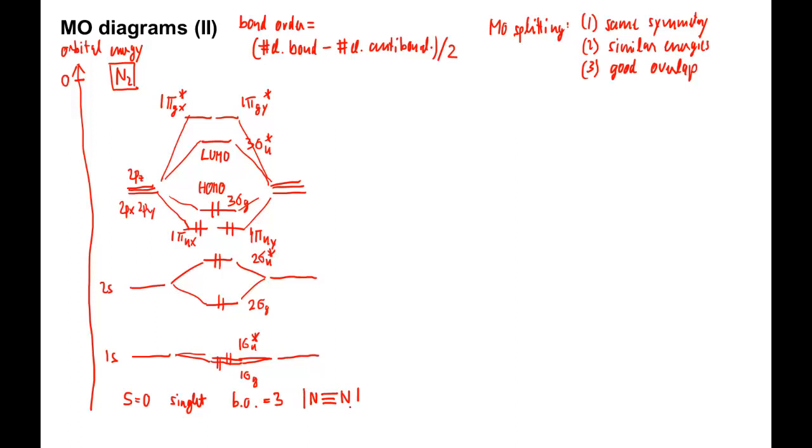Other diatomics with an MO diagram with the same order of MOs are lithium-2, beryllium-2, boron-2, and carbon-2. Of course, the MO energies and the number of electrons will be different for these species, but the order is the same.